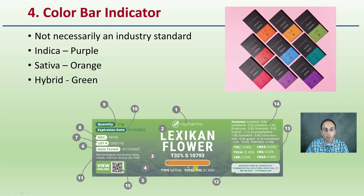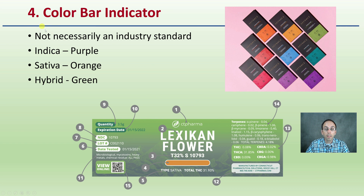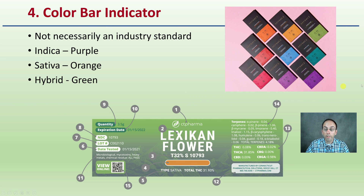Working down further, we see a color bar indicator. This isn't necessarily an industry standard, but for CT Pharma, indica is purple, sativa is orange, and hybrid is green — making it really easy for quick comparisons. However, don't assume that because you're buying something from another company with an orange color that it must be a sativa. The colors in this example apply specifically to this particular company.